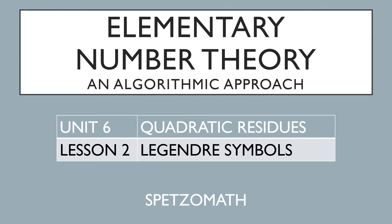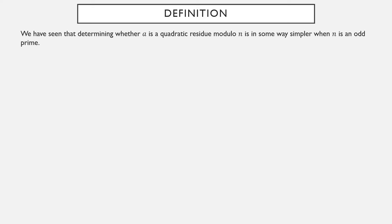We're now going to introduce the notion of Legendre symbols, a function whose values are somehow related to what numbers are or are not quadratic residues modulo a base. We observed already that modulo an odd prime, determining which numbers are or are not quadratic residues is a bit simpler. Half of the non-zero residues are quadratic residues and half are not.